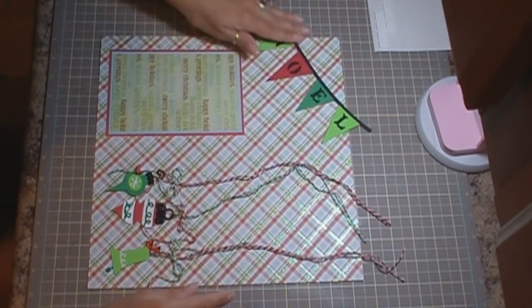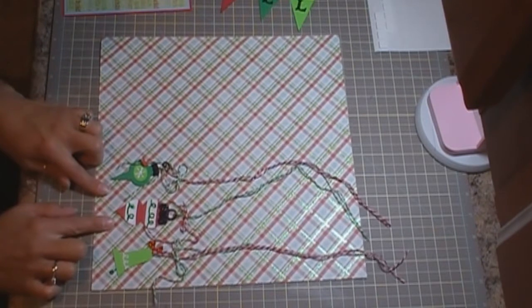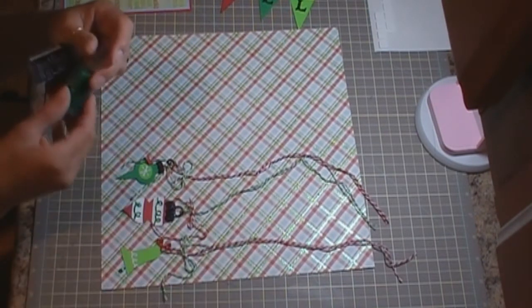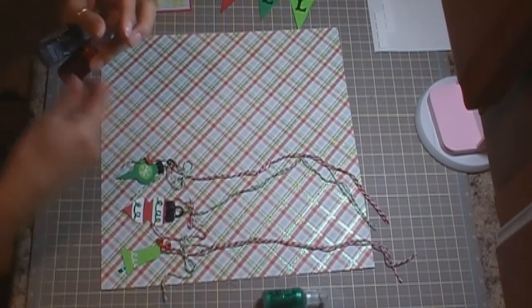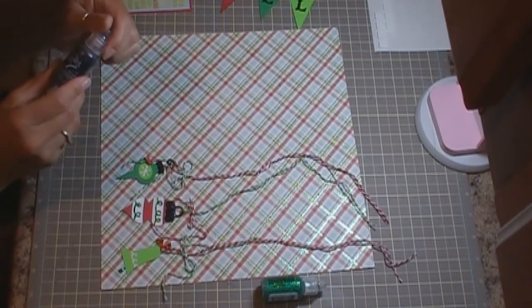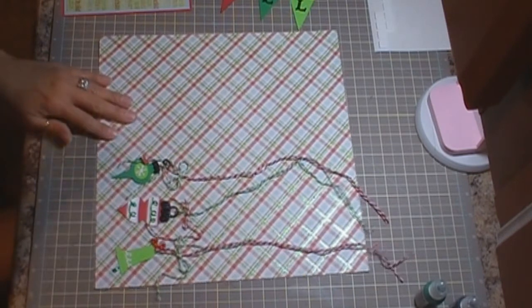So before I attach anything, I'm going to attach the bulbs. I did go ahead and I used some stickles. I used frosted lace, just a green, and then I used Christmas red and black diamond to kind of dress up my Christmas bulbs.